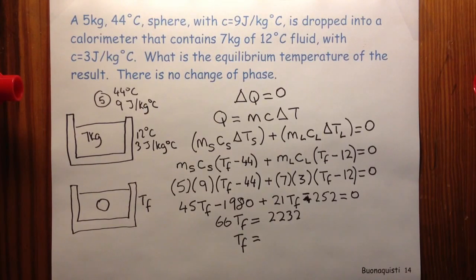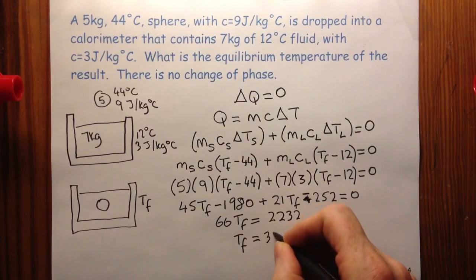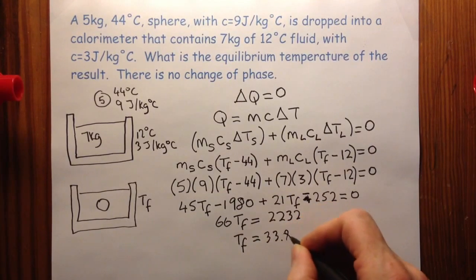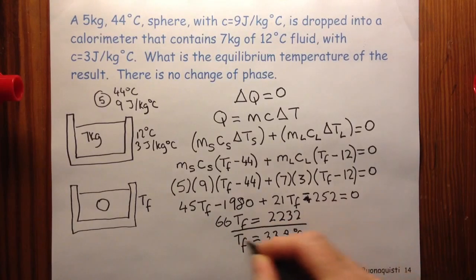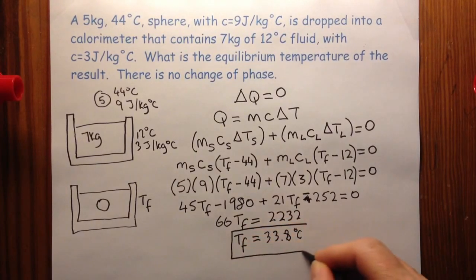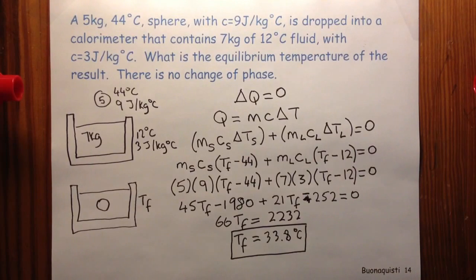So TF is equal to 2232 divided by 66. And that's going to equal 33.8 degrees C. So there's my final answer. Put it in a nice box. And there we have it.